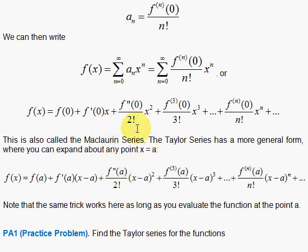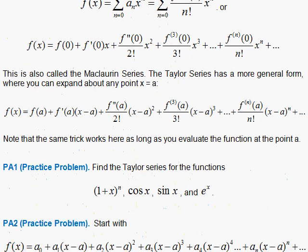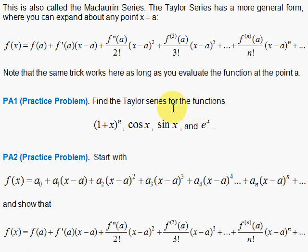This is also called the Maclaurin series, and it's a specific case of the general formula of the Taylor series, which allows you to write f of a plus the first derivative evaluated at a, then times x minus a.